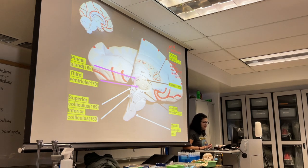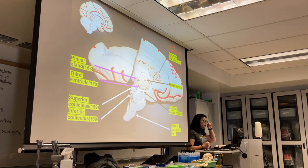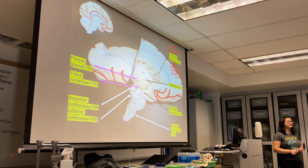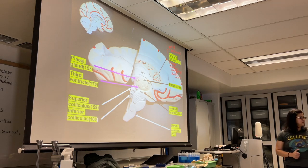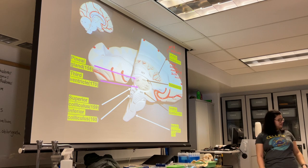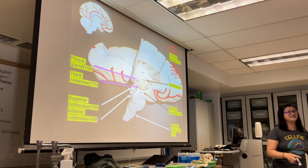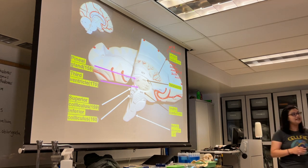Structure number 149 refers to a part of your brain called the caudate nucleus. The caudate nucleus is part of structures called the basal nuclei. Remember, in the central nervous system a nucleus is a cluster of cell bodies — the same structure in the PNS is called a ganglion. A cluster of fibers in the CNS is called a tract; in the PNS, that's called a nerve.